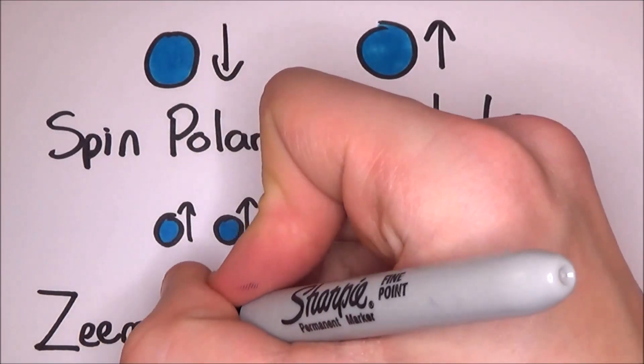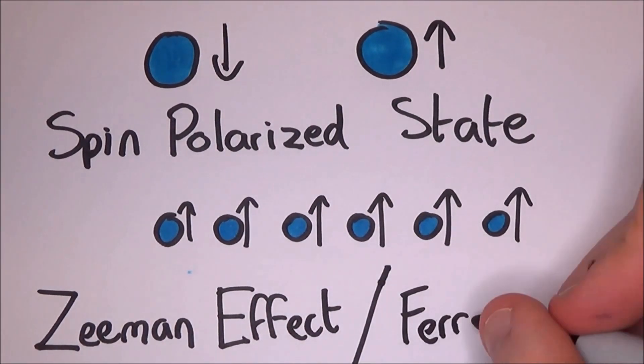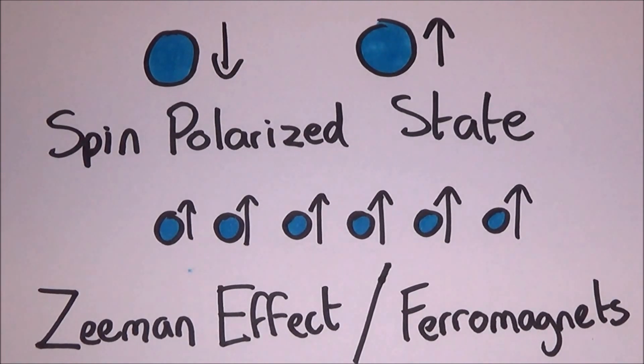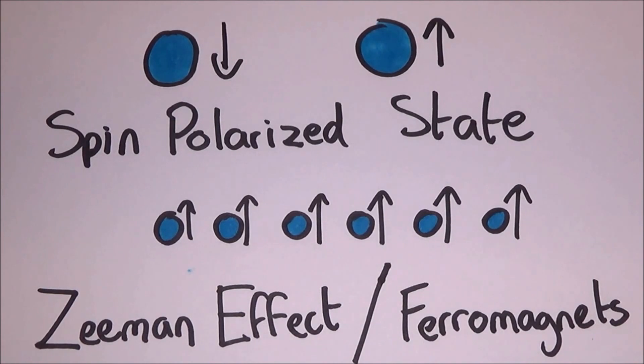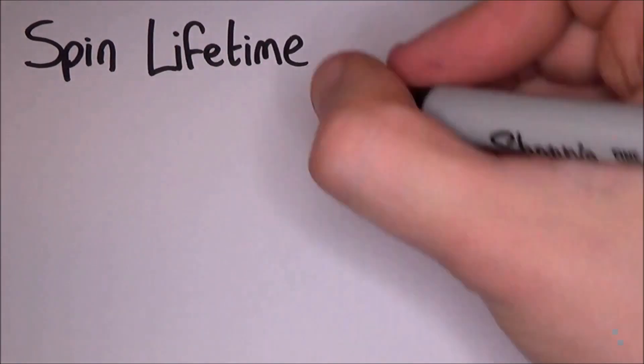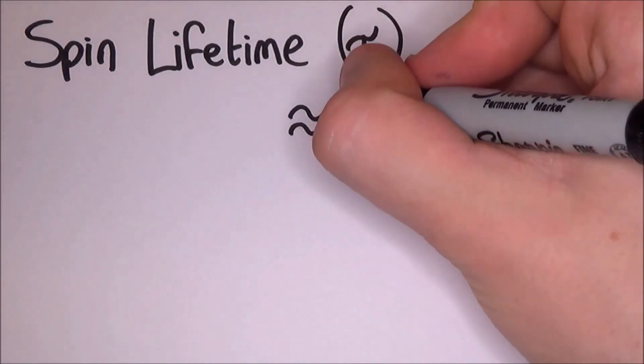Either by exposing them to a large magnetic field, known as the Zeeman effect, or you can use ferromagnets. They're just materials like iron which can be used to make permanent magnets or are attracted to other magnets. The period of time for which the polarized state can be maintained is known as the spin lifetime, denoted by the letter tau.